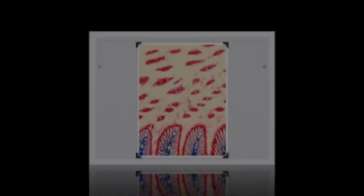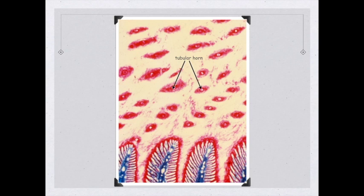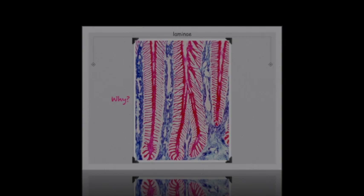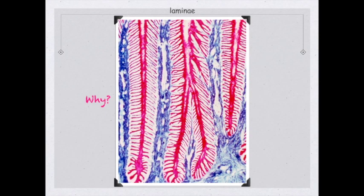In this image we can see tubular horn very clearly, with inter-tubular horn in between. Looking more closely at the laminae, we have not only primary laminae but secondary laminae — someone has counted approximately 600 primary laminae with about 1,000 secondary laminae. The importance of all these laminae is that they increase surface area for attachment of the hoof to the underlying connective tissue.